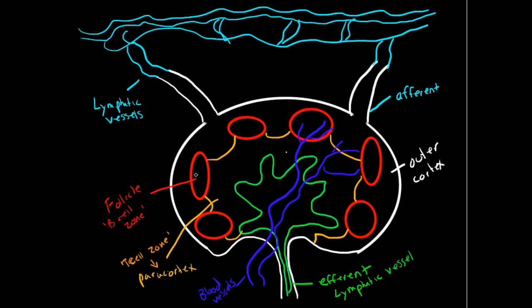So as you can see here, we have these follicles, which are the B cell zone, and you have this paracortex, which I'll kind of shade in, which is your T cell zone. So all of this area here is your T cell zone.